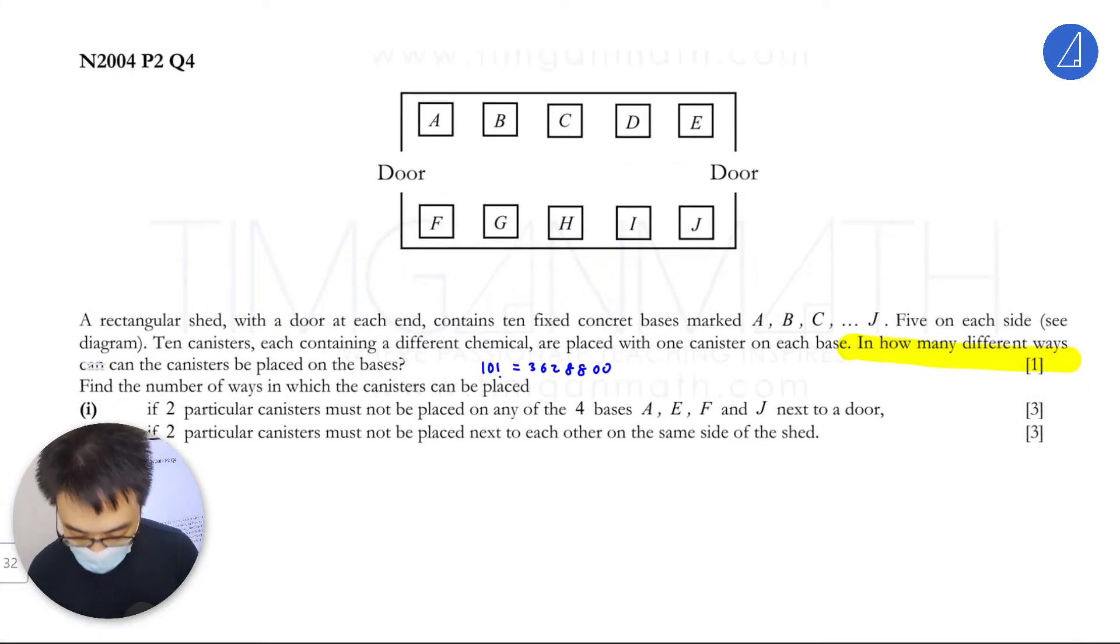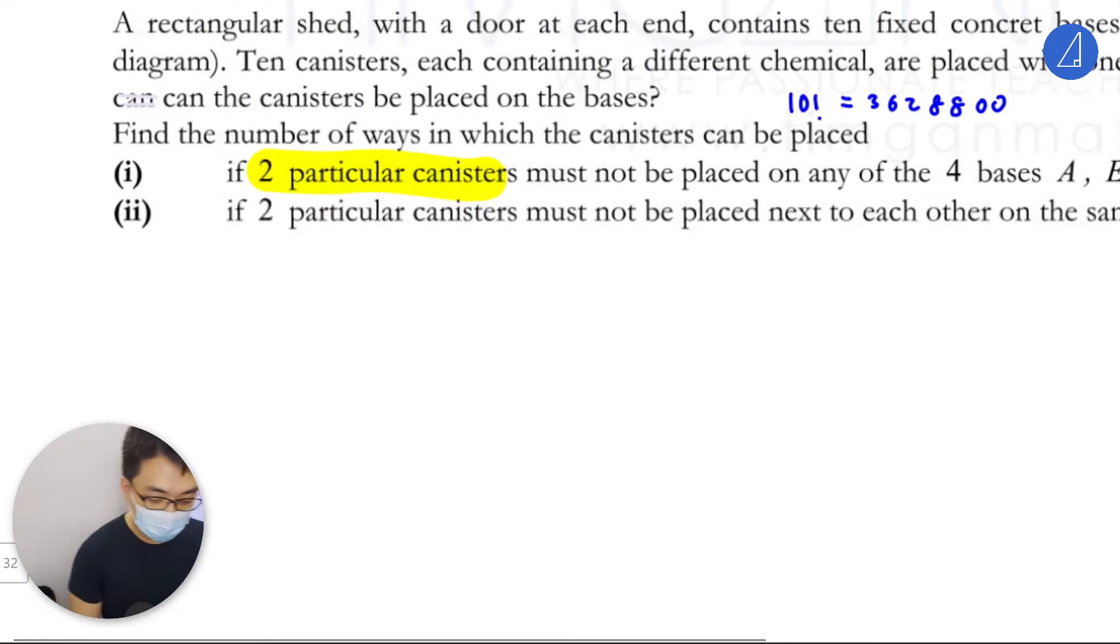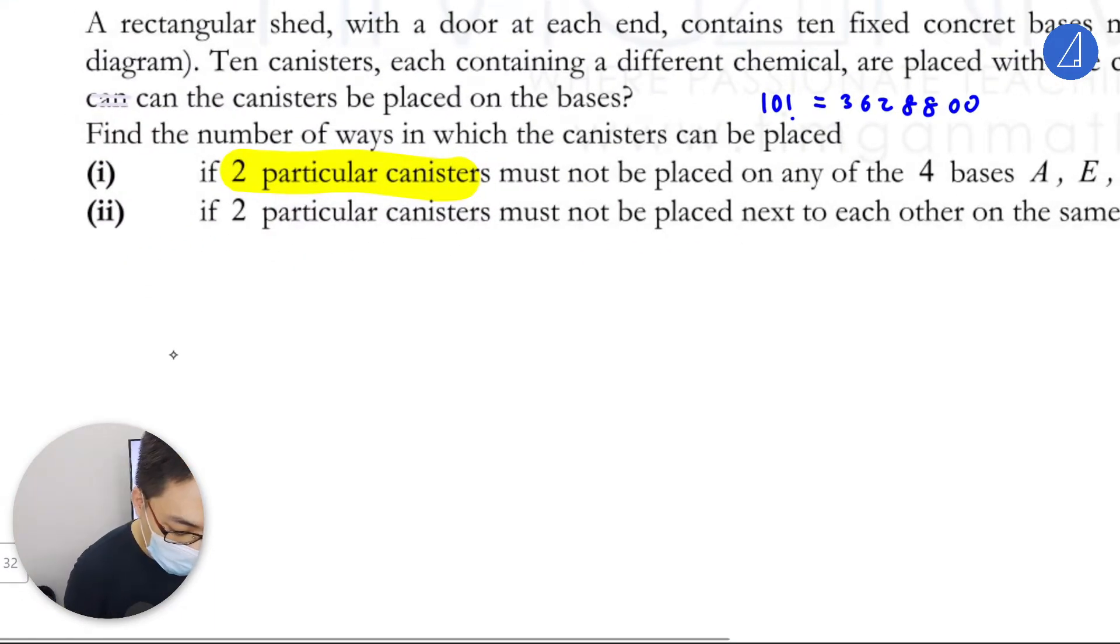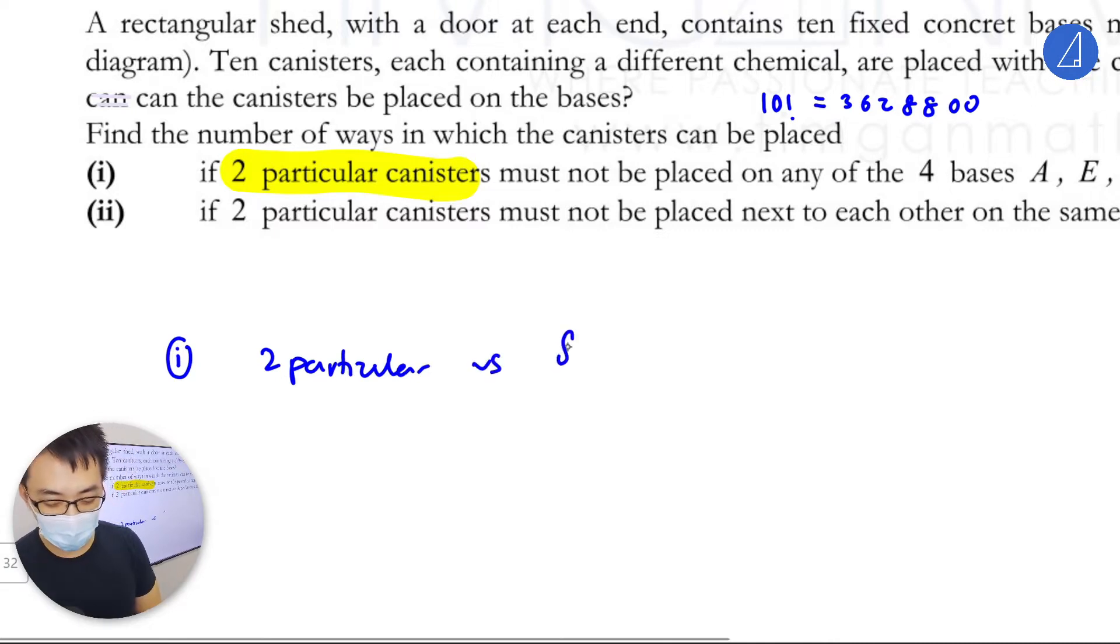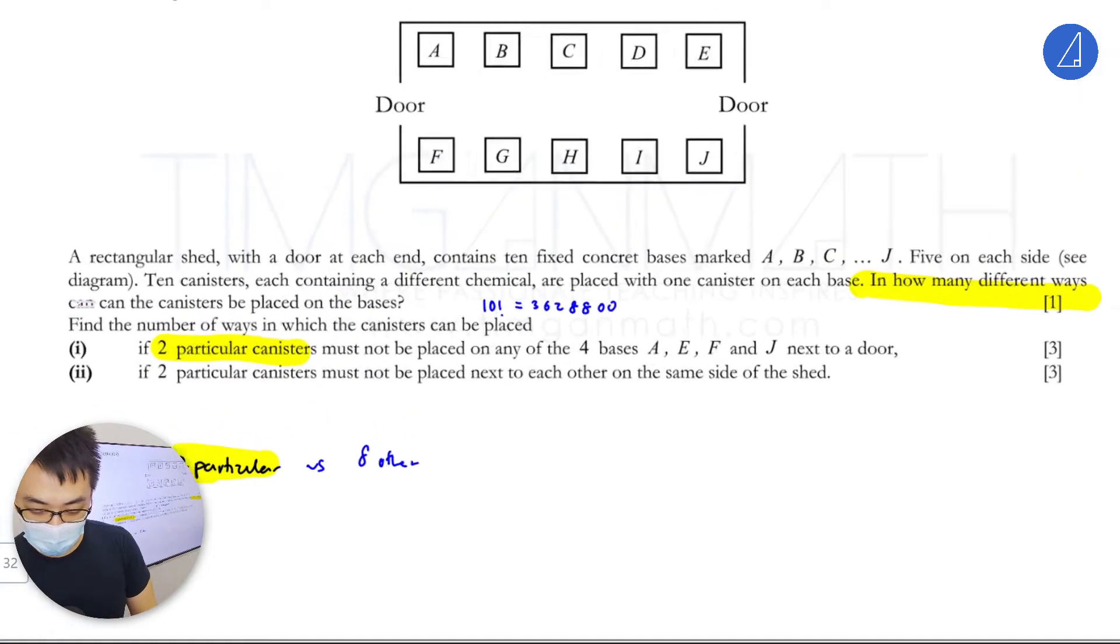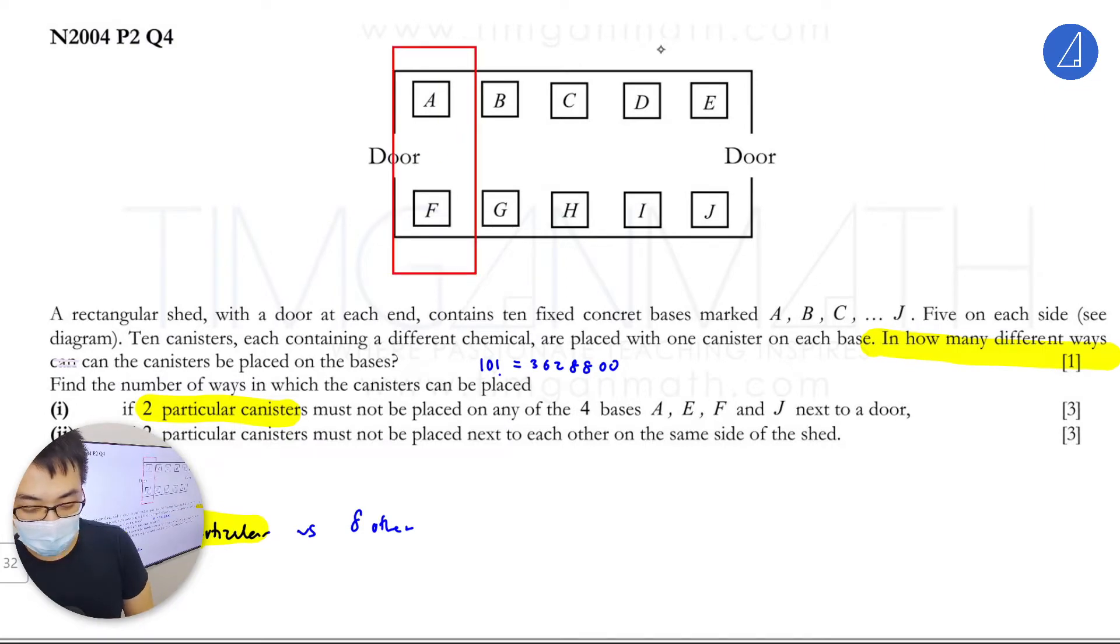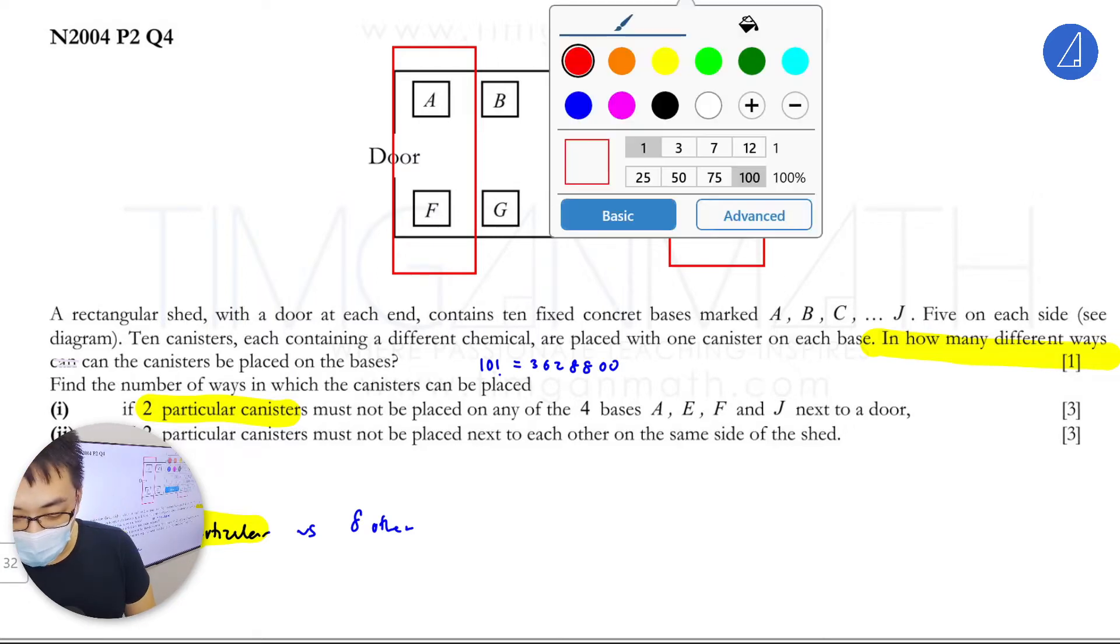For this part, if two particular canisters - the first thing is the objects are very important. You need to know what you're referring to. There are 10 canisters, so think about the two particular ones versus the eight others. Let me read the question properly: bases marked A, B, C, D must not have these two particular canisters placed on them. Maybe they are photosensitive, so you can't put them in direct sunlight. You can only put them in the middle here.